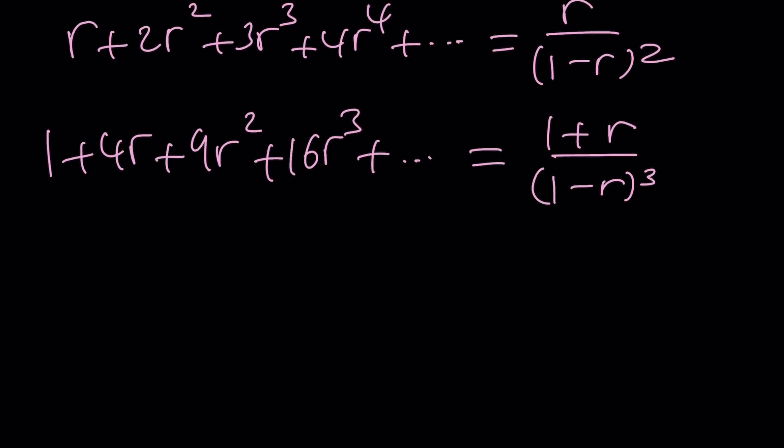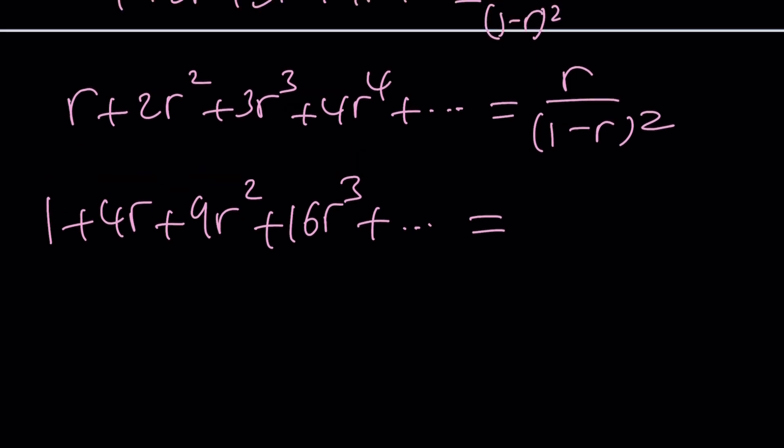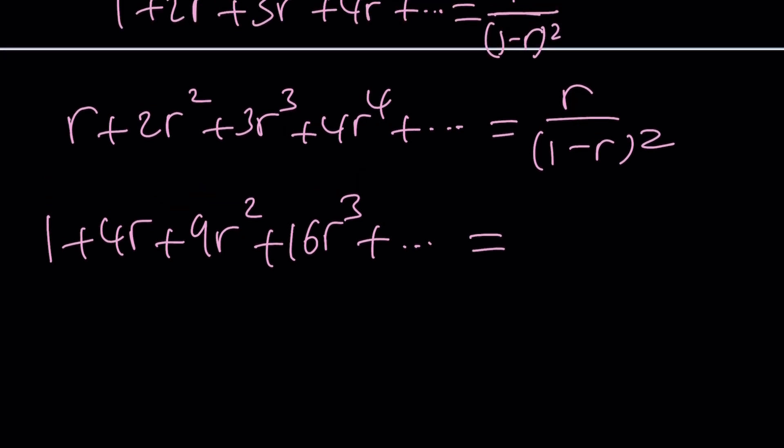When you differentiate using the quotient rule, you're going to get 1 plus R over 1 minus R to the third power. If you differentiate this, you're actually going to get from the quotient rule the derivative of R times the denominator plus the derivative of the denominator, which is 2 times 1 minus R times negative 1, so it's going to become negative, times the first function which is R. This is going to turn into, eventually, after you simplify, 1 plus R divided by 1 minus R to the third power.